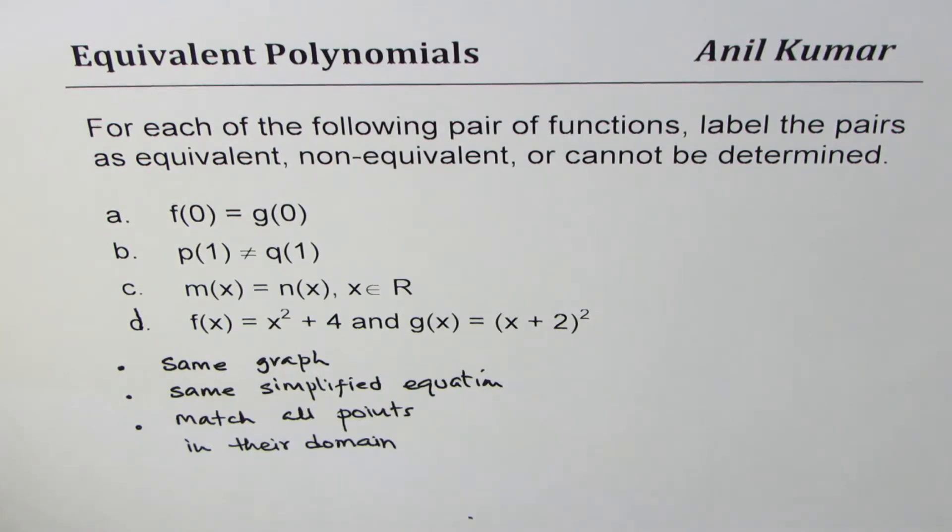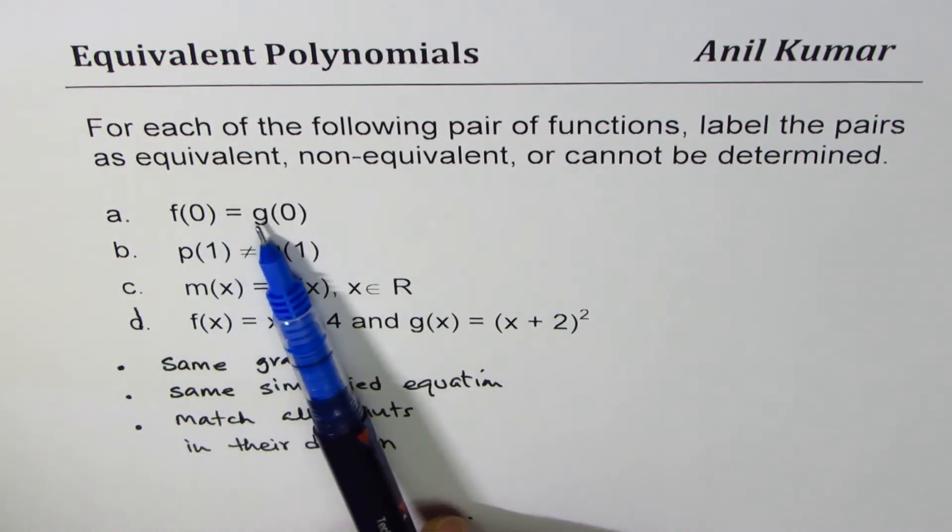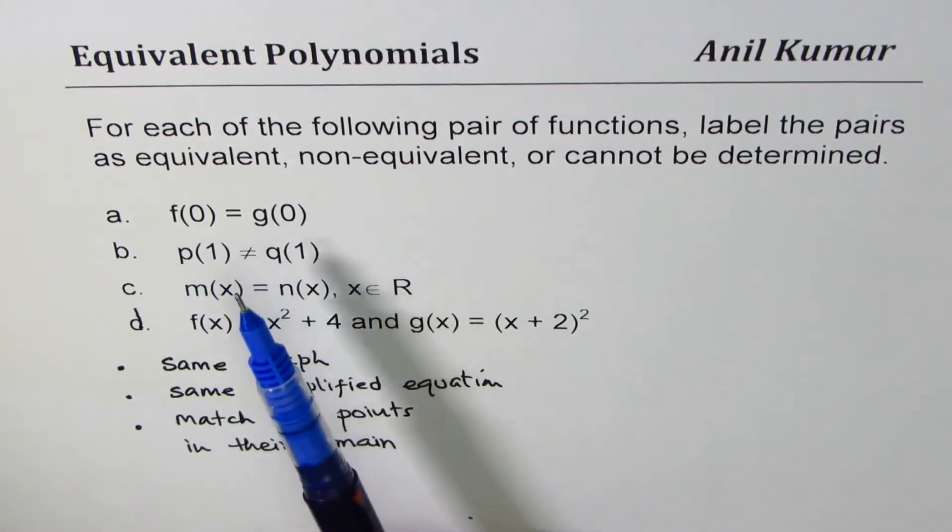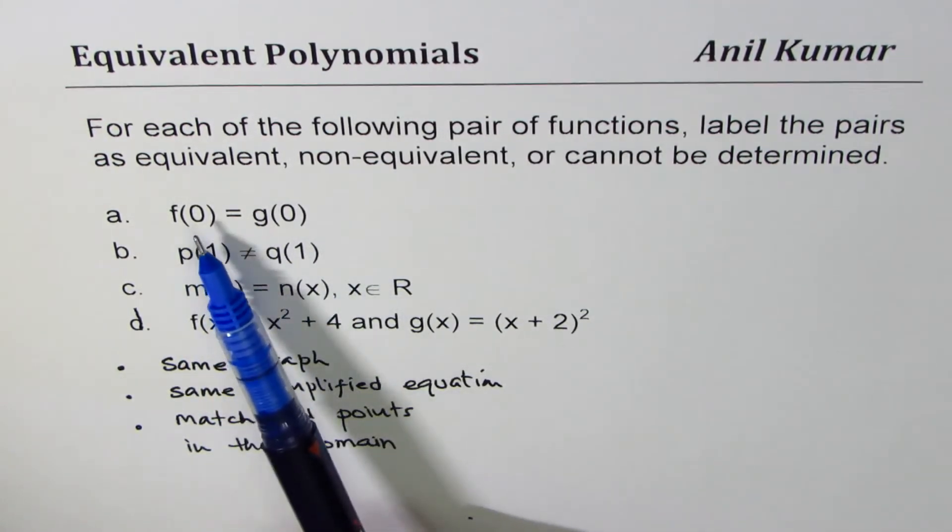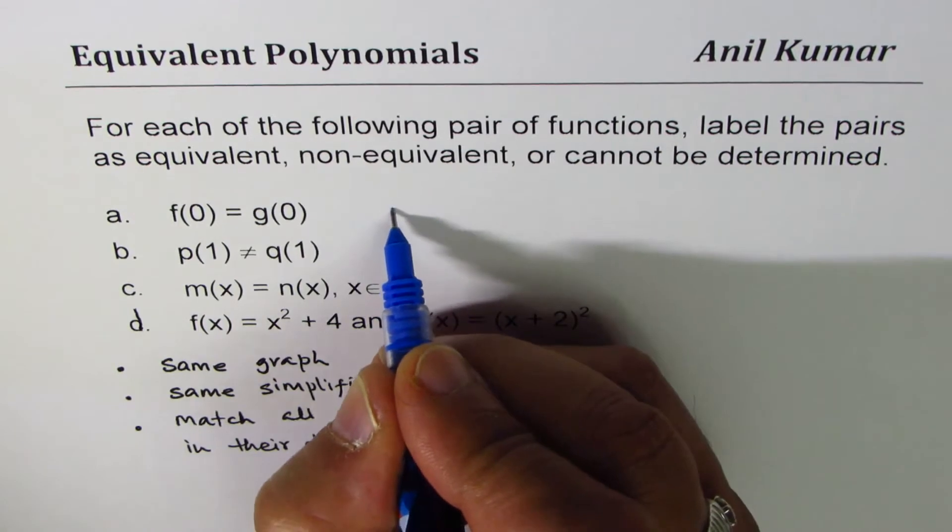So let's answer right from the very beginning. We are given f(0) equals g(0). Now these two are equivalent or not? Since we are only given one point, we don't know about the other points. We say it cannot be determined.